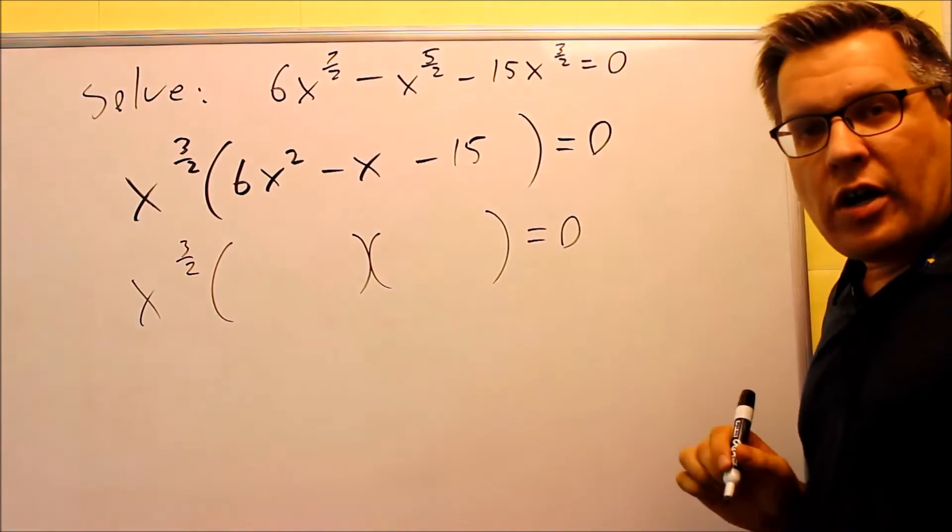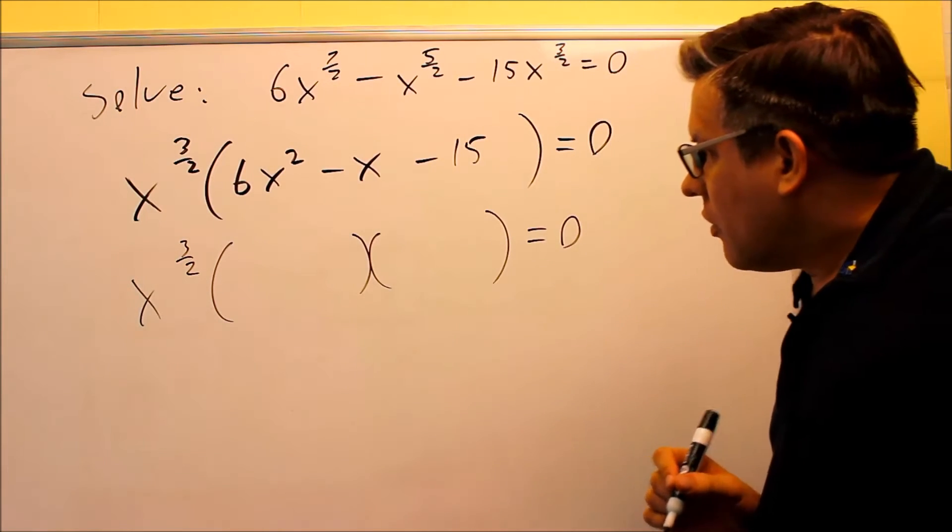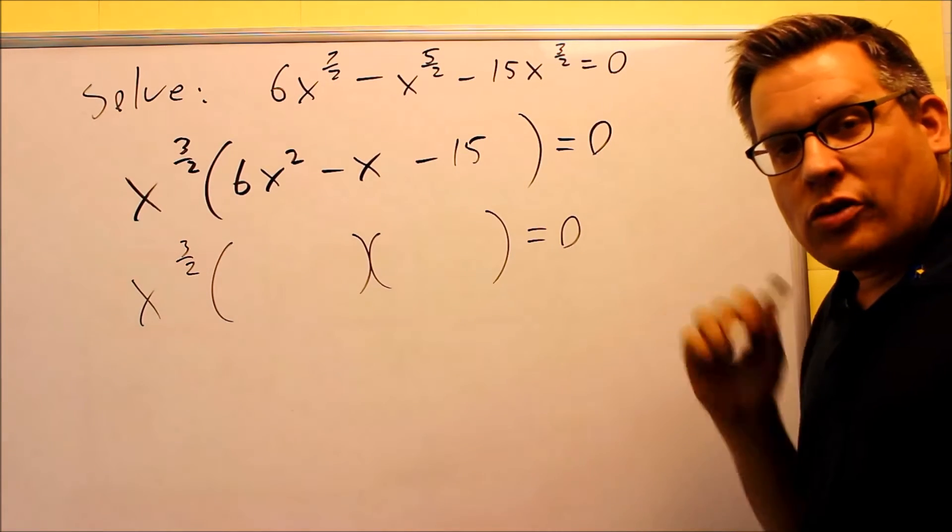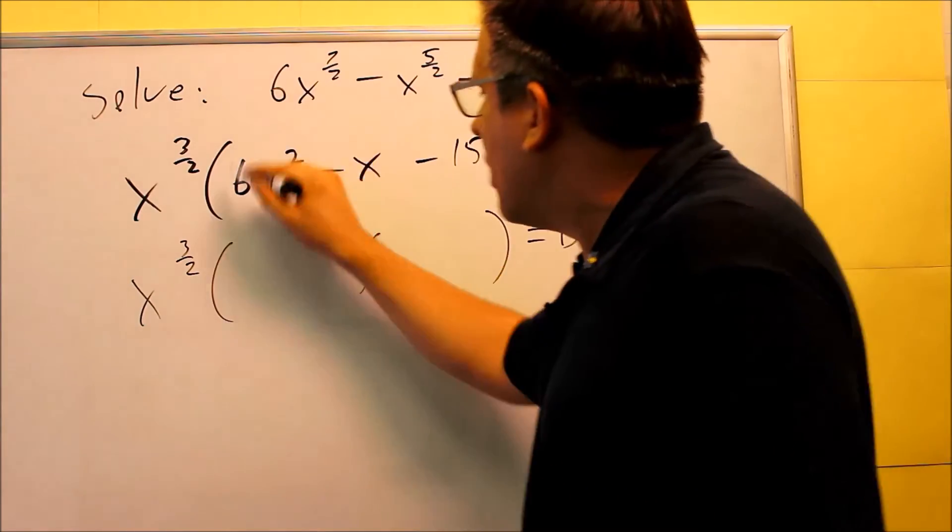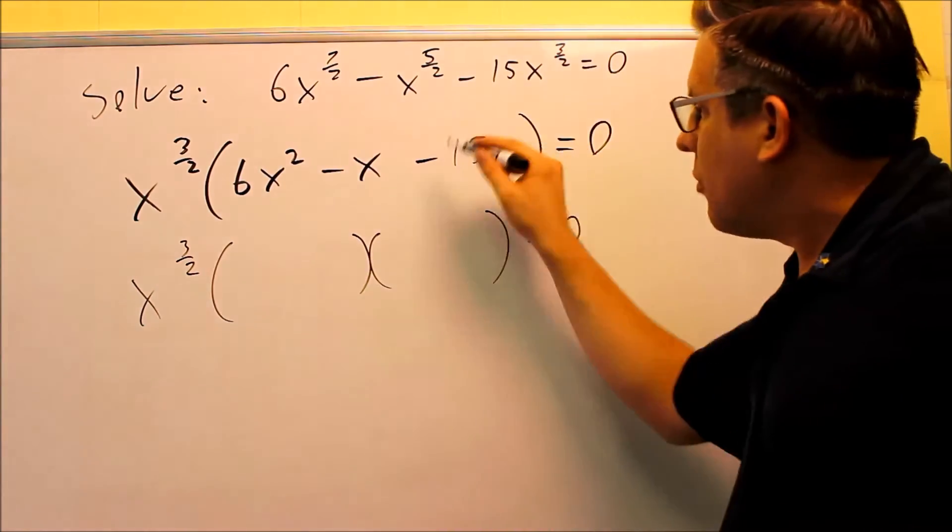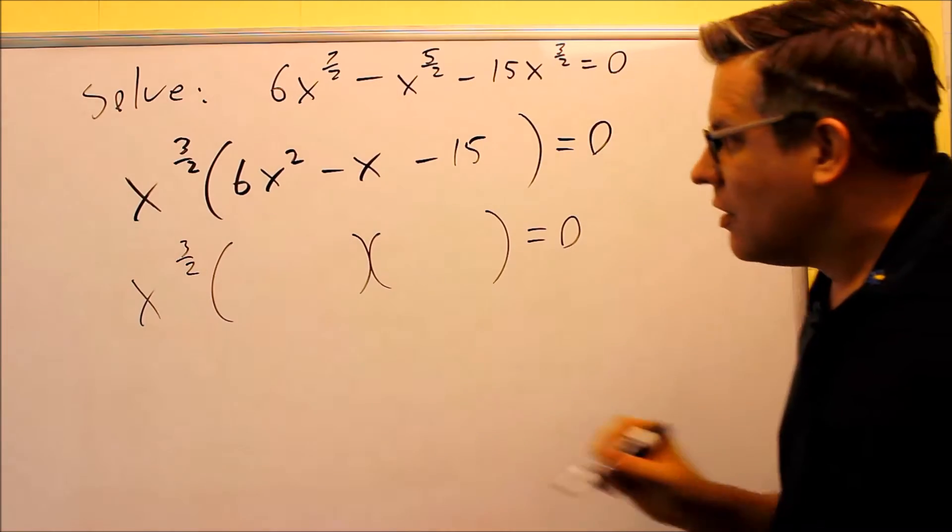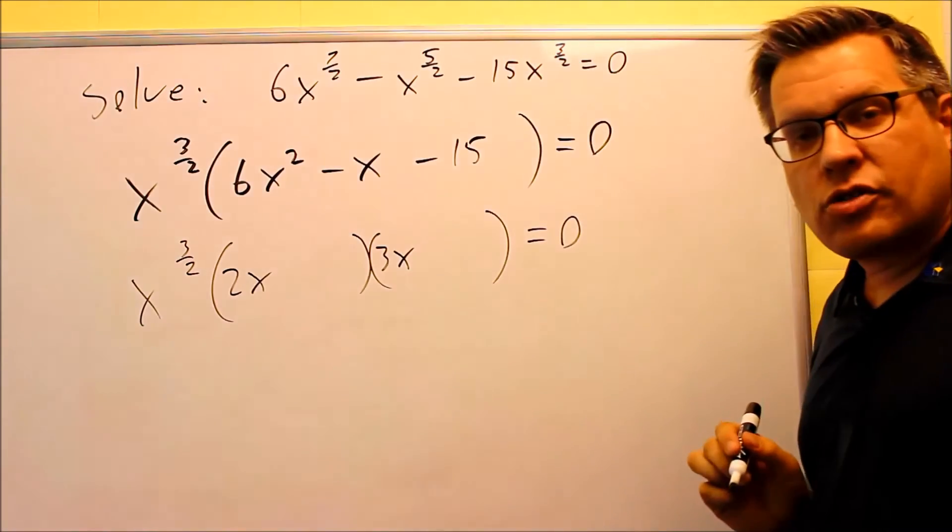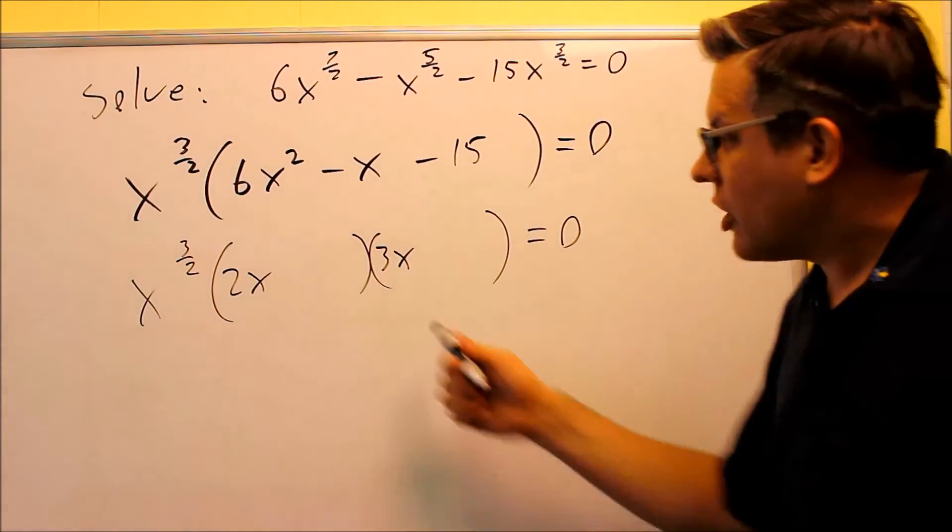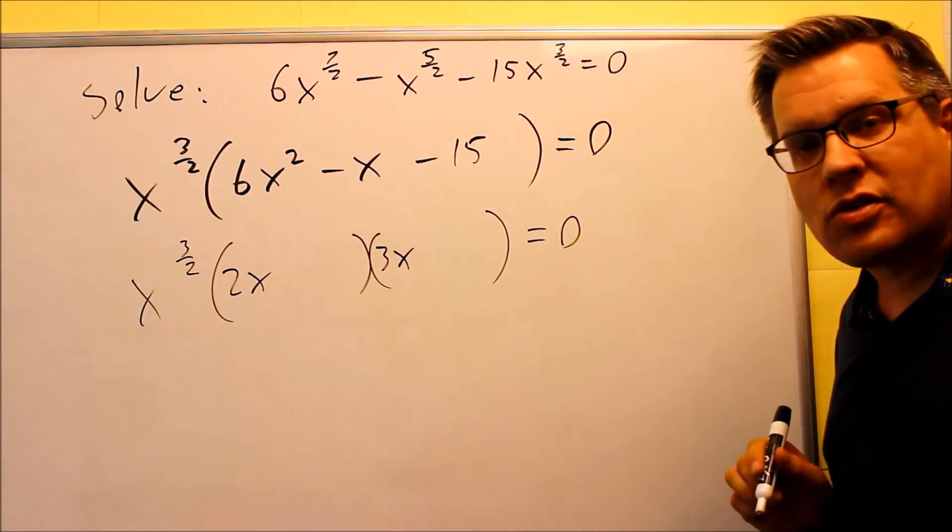Now, it might have been a while since you've done factoring, so I'm going to do a review of this. For a lot of these problems, the easiest way to do it is going to be by trial and error. So what I mean by that is you're going to look for numbers that multiply to make 6 and numbers that multiply to make negative 15. Numbers that multiply to make 6, you can either try 2x and 3x, or you can try x and 6x. They're different combinations, but I'm going to start with 2x and 3x.